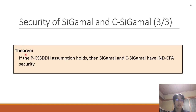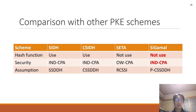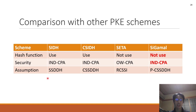And here is a theorem. If the PC-SSDDH assumption holds, then C-GAMMA and CC-GAMMA have IND-CPA security. And here is a comparison with other PKE schemes. SIDH and CSIDH have IND-CPA security, but these schemes use hash functions. And CETA does not use hash functions, but CETA has only one-way CPA security. So in this meaning, C-GAMMA is more secure than these PKE schemes.